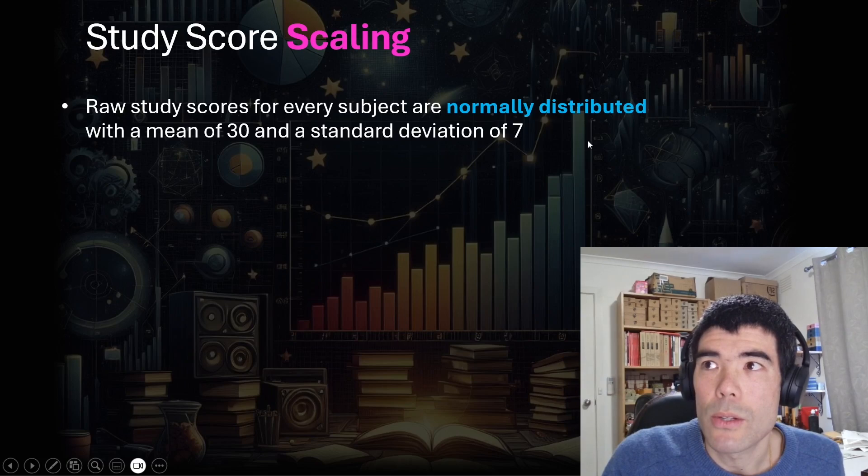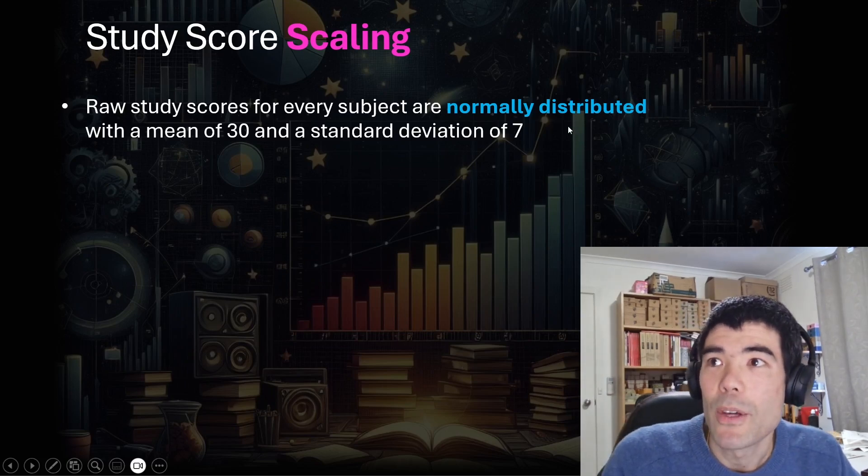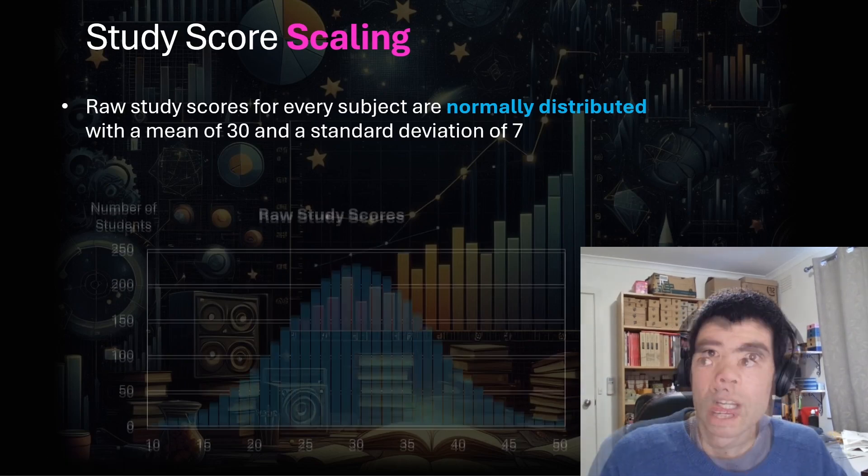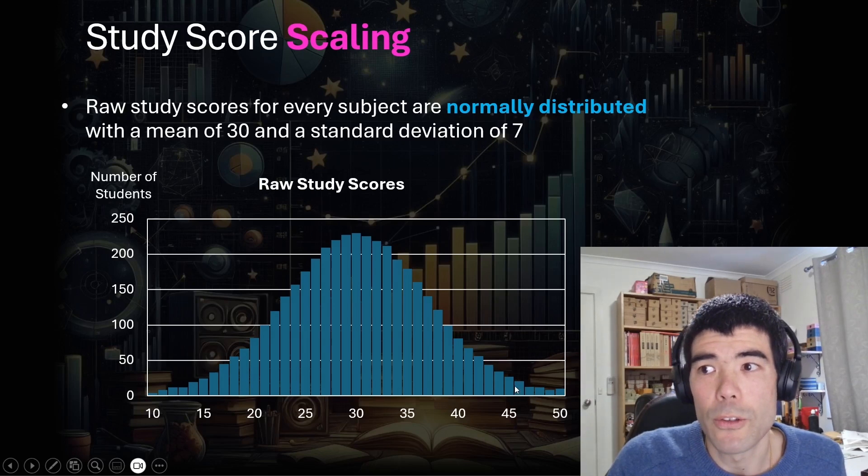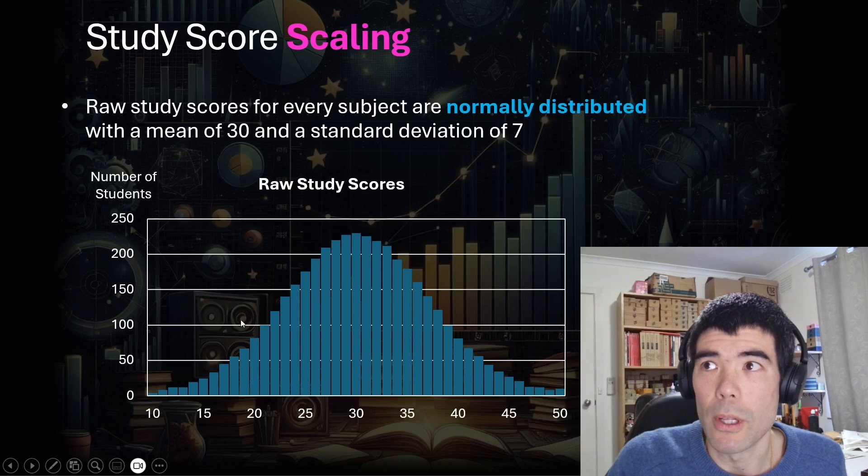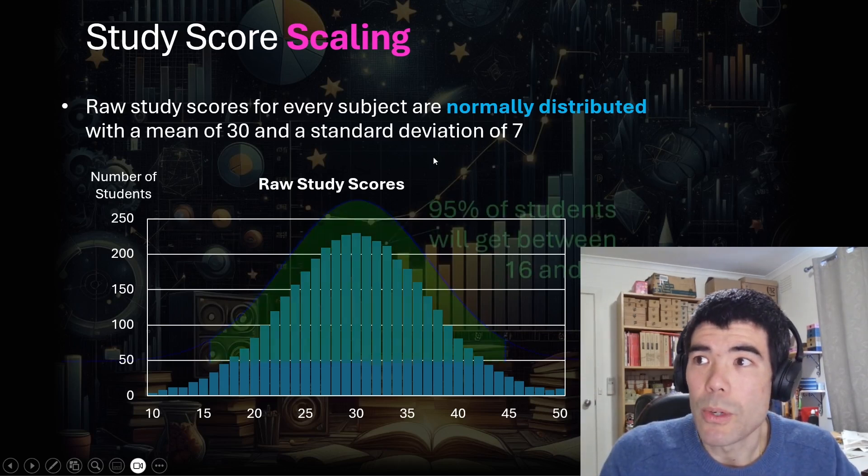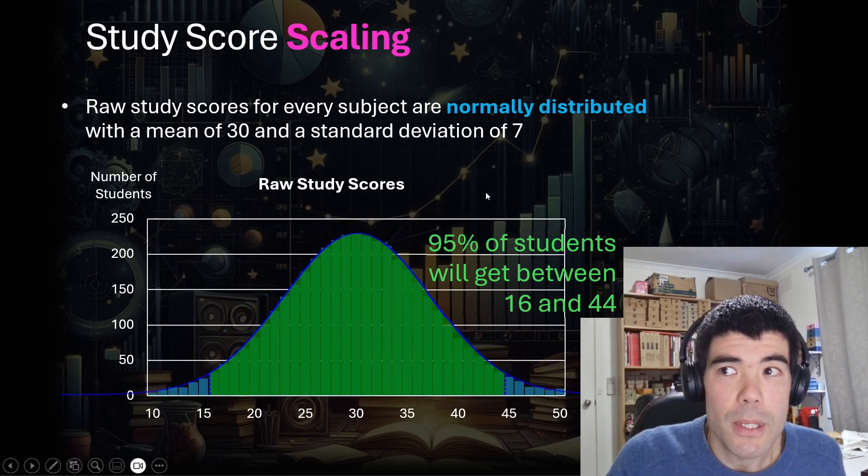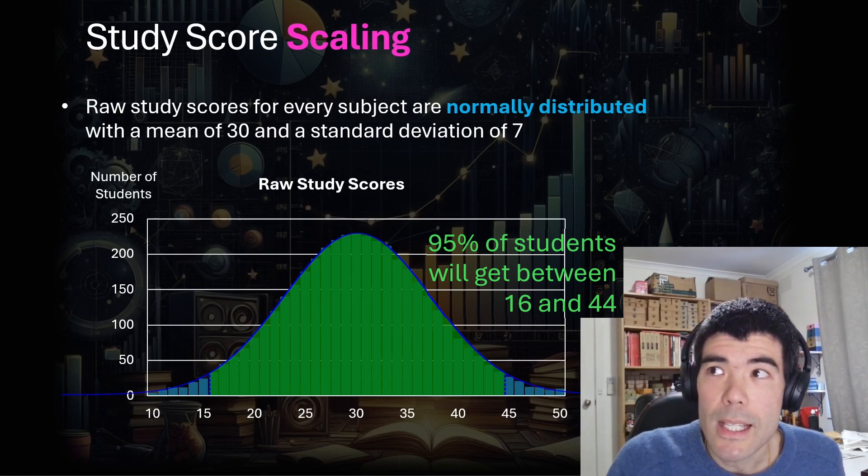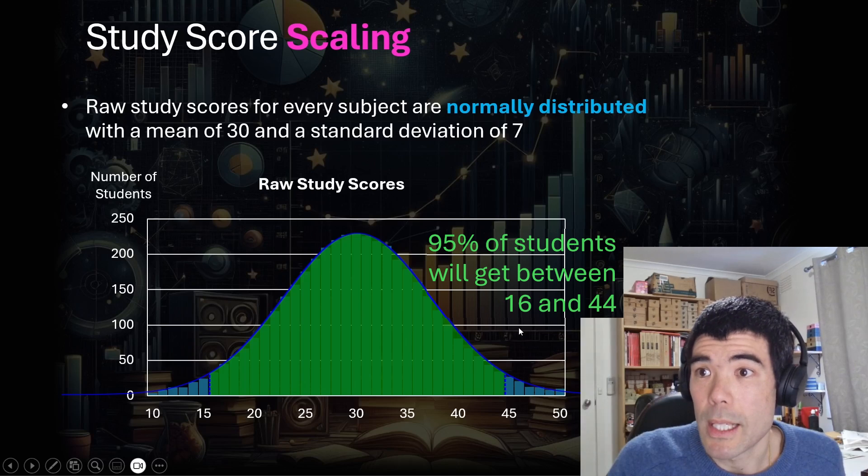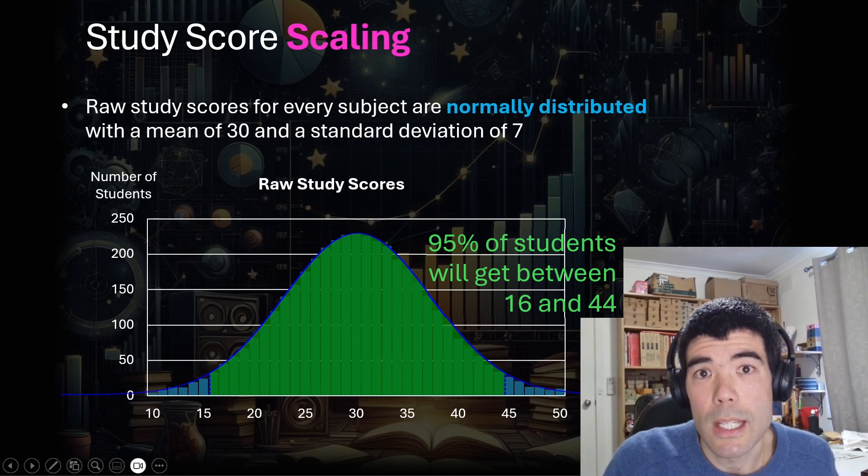So let's talk a little bit more about how it works. As we said, raw study scores are normally distributed with a mean of 30 and a standard deviation of seven. So you might have seen a normal distribution before. If not, it looks something like this. So most people are around the middle, in this case, around 30, very few people are up in the high 40s, and very few people are in the low teens or below. If you've studied general mathematics, you would know that for example, we can calculate that 95% of all students would be within two standard deviations of the mean. In this case, that is between 16 and 44. So 95% of all students would get study scores between 16 and 44.